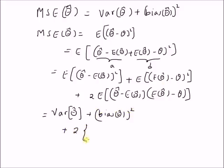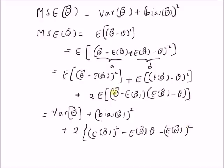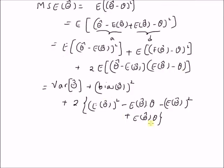For the third term, expanding 2ab gives terms that cancel each other out: this term cancels with this one and this one cancels with this one. So the 2ab term is basically zero. Therefore, MSE of theta hat is equal to the sum of the variance of the estimator plus square of the bias.